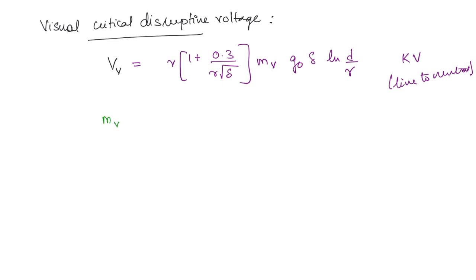Just M V, this has a value of 1 for a smooth polished wire. If it is given that it is a polished wire then you take M V is equal to 1.